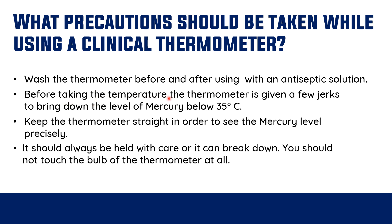Second point: before taking the temperature, the thermometer should be given a few jerks to bring down the level of mercury below 35 degrees Celsius. You shake the thermometer a few times before measuring, so that the mercury level is confirmed to be below 35 degrees Celsius, and then you measure the temperature.